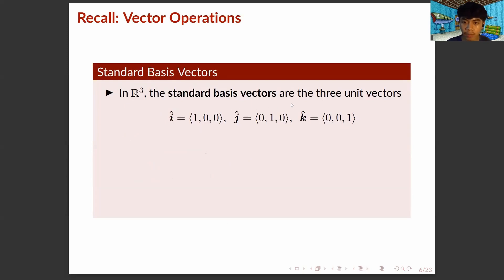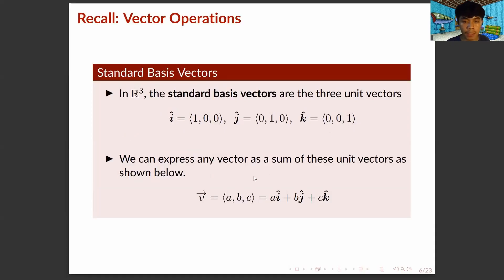In R3, the standard basis vectors are the three unit vectors: i-hat, which is equal to (1, 0, 0); j-hat, which is equal to (0, 1, 0); and k-hat, which is equal to (0, 0, 1). These three unit vectors are linearly independent, and we can express any vector V as a linear combination of i-hat, j-hat, and k-hat.